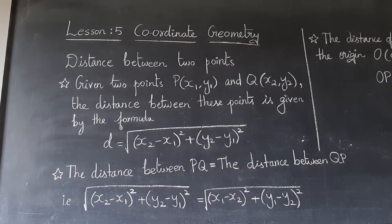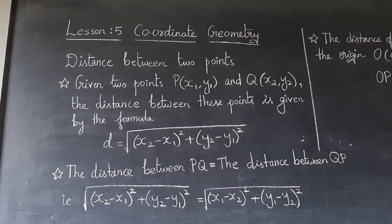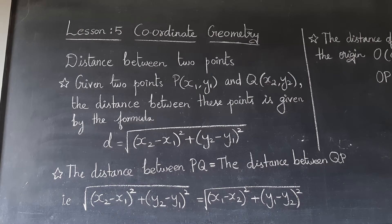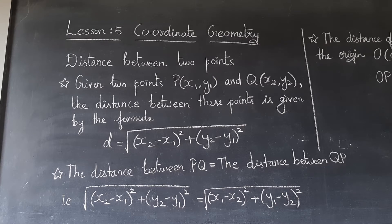Hello class nine, today we are going to learn a new lesson — Lesson 5: Coordinate Geometry. You already know the map of the real number system as a number line. It extends infinitely in both directions. In between any two points on a number line, there lies an infinite number of points.